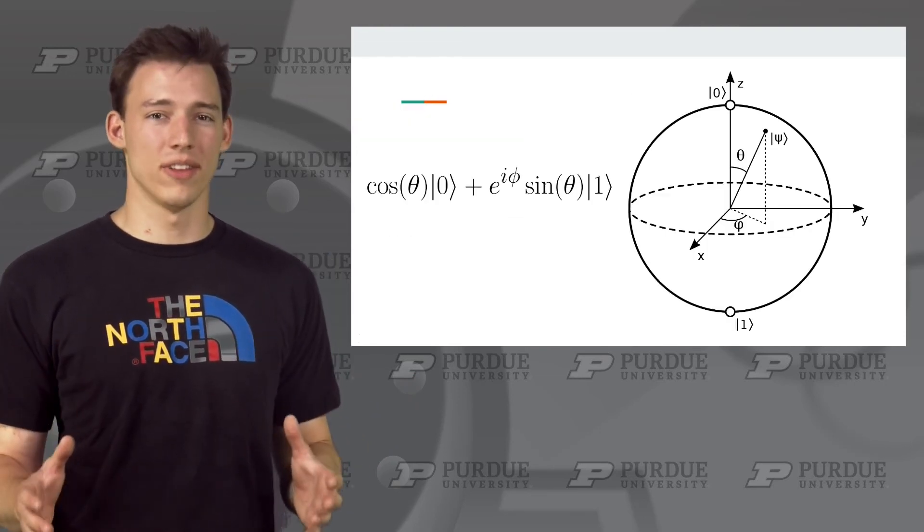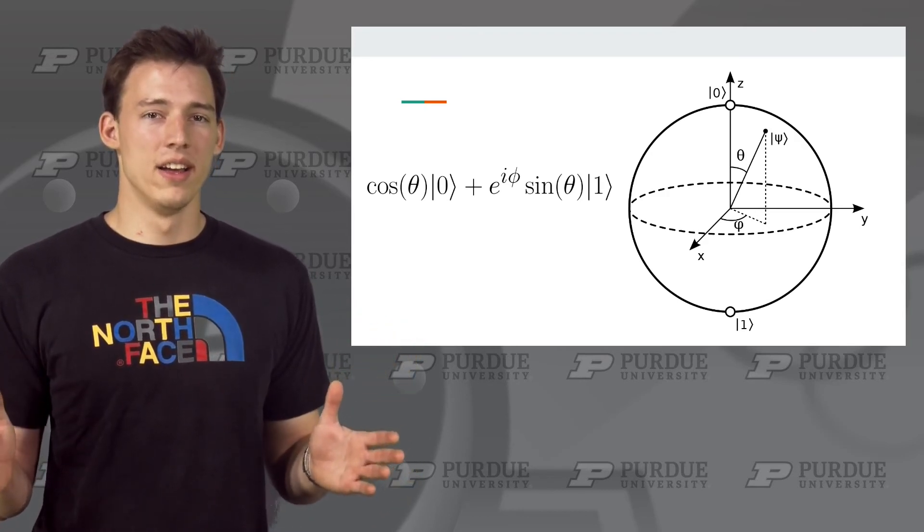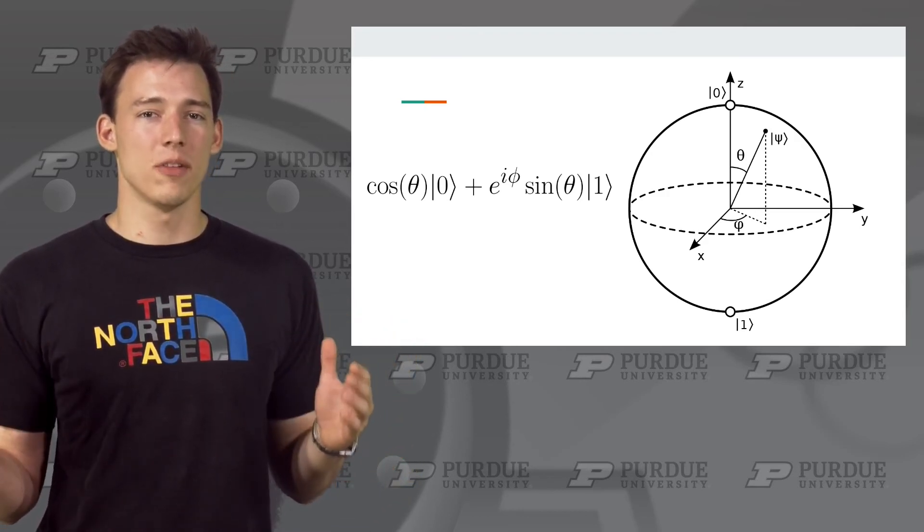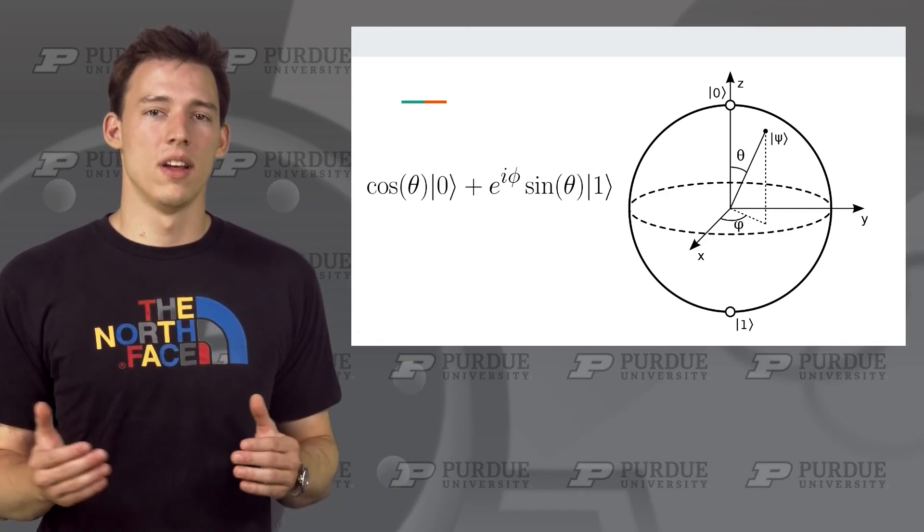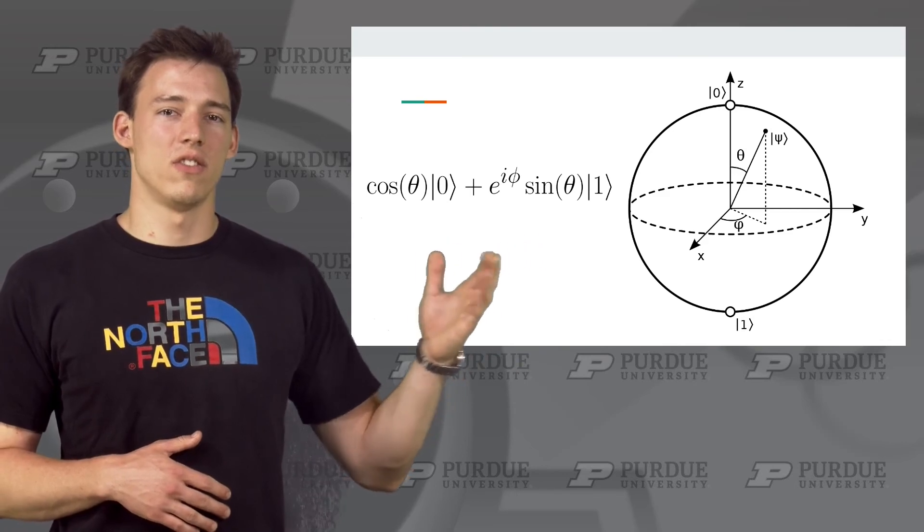So, since we are limited to vectors of length 1, which can be varied by 2 degrees of freedom, theta and phi, this means that we can now plot all of the possible states on a sphere. This is what the Bloch sphere is. Any single qubit state can exist on this sphere. Unfortunately, no such easy visualization exists for multiple qubits.